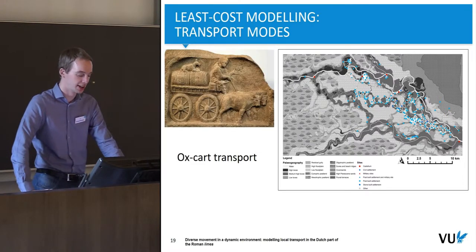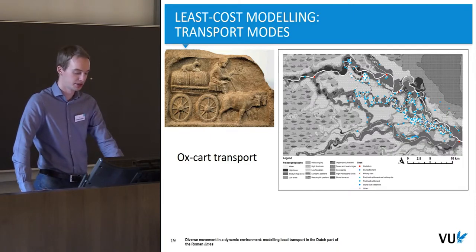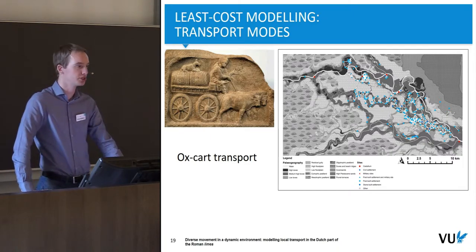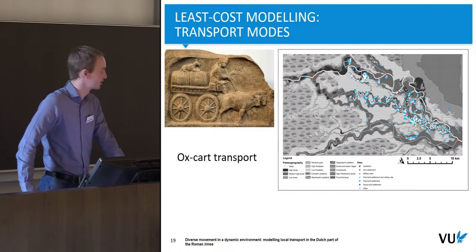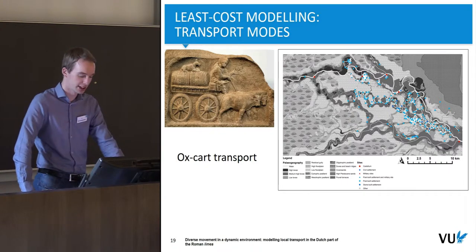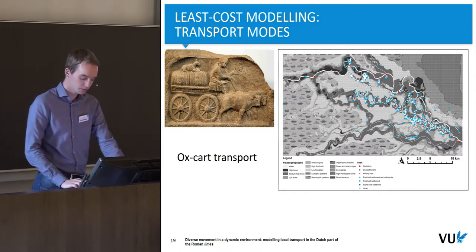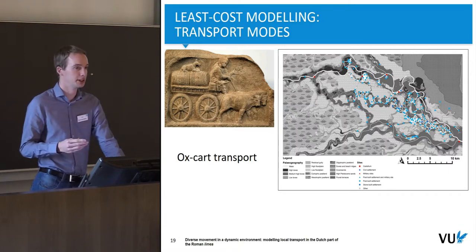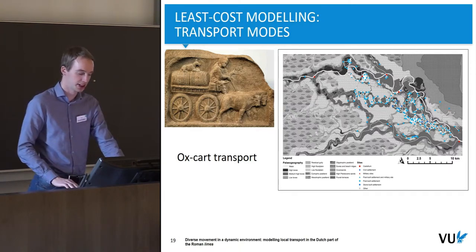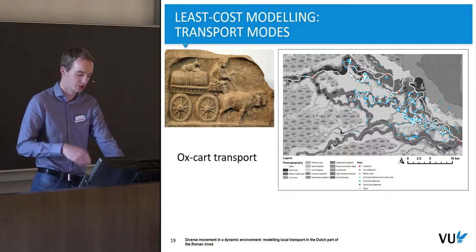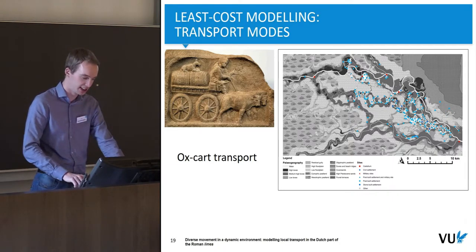Ox carts, on the other hand, are a relatively slow mode of transportation, so the network shows very few connections. You can see that the mode of transportation available to someone would change a lot how the network materializes in the end.